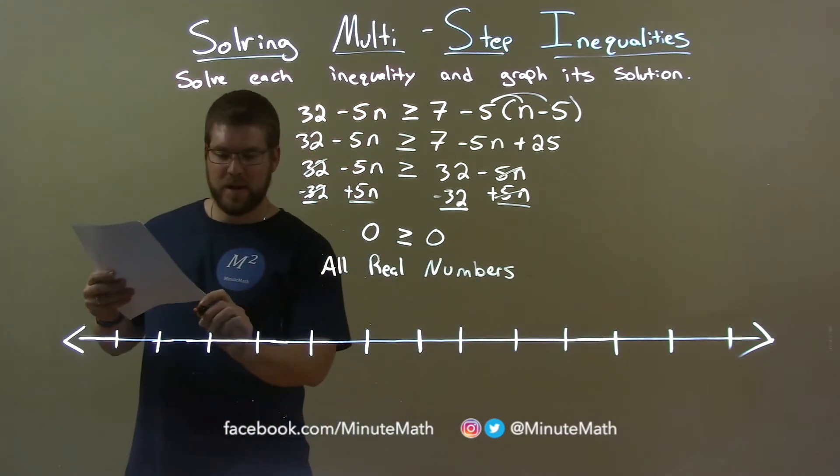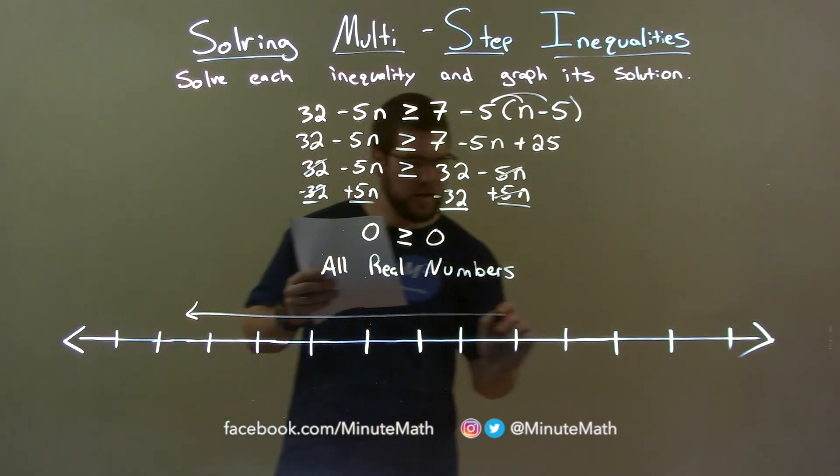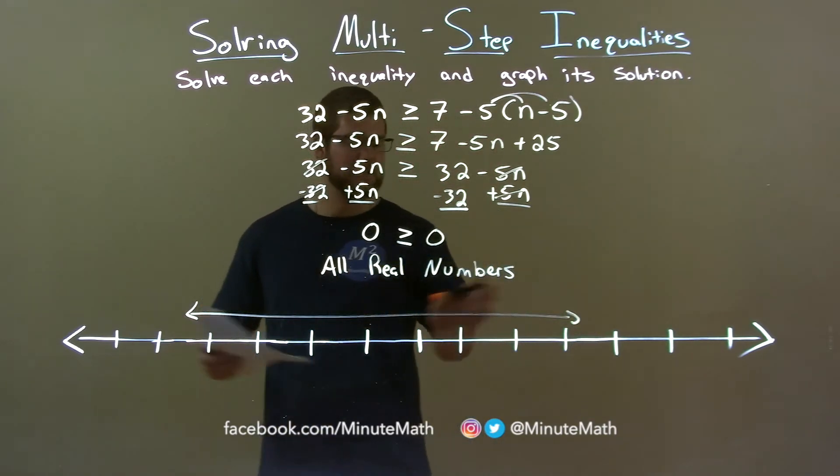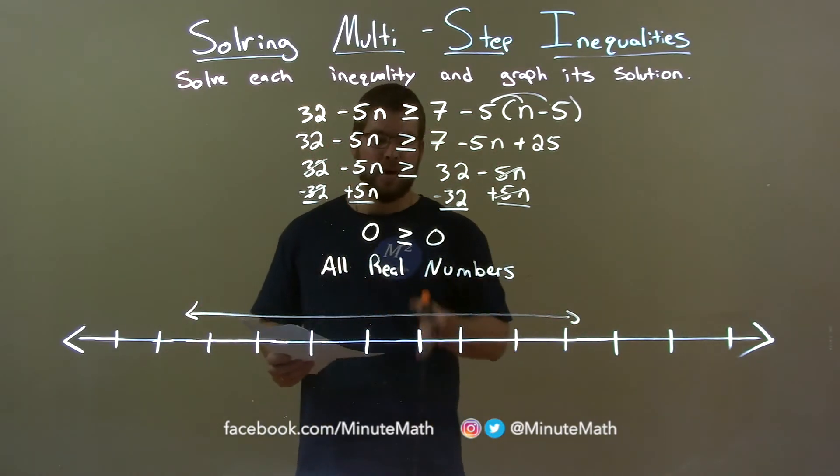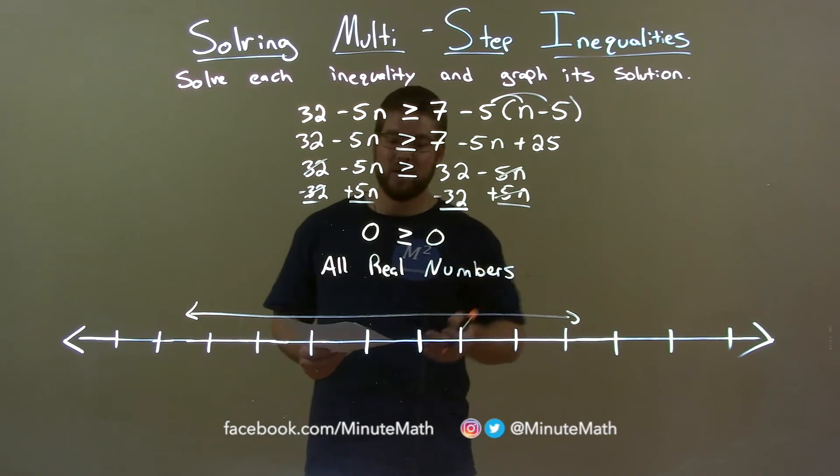So, if I was to graph this, it would actually be an arrow that covers everything. It goes in both directions, both ways, forever. So, now we have a graph that matches our final answer, all real numbers.